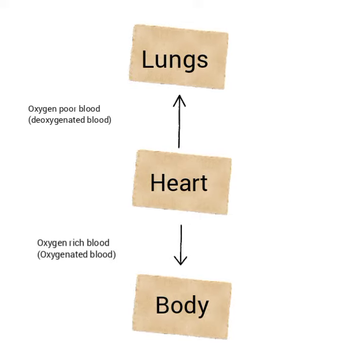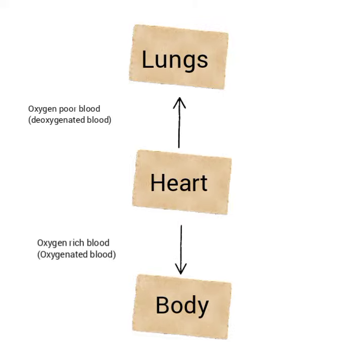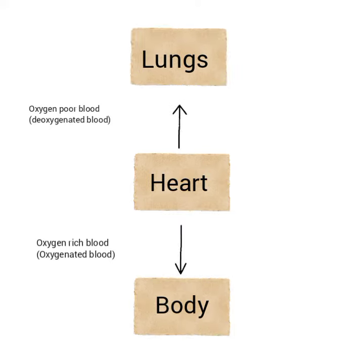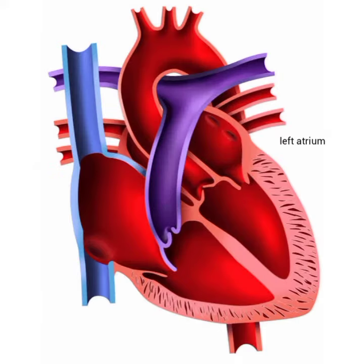یہ deoxygenated blood — مطلب وہ خون جس میں oxygen کم مقدار میں ہوتی ہے — کو پھیپھڑوں کی طرف پمپ کرتا ہے، جبکہ oxygenated blood — مطلب وہ خون جس میں oxygen کی زیادہ مقدار ہوتی ہے — اسے پورے جسم کی طرف پمپ کرتا ہے۔ There are four chambers in our heart: upper two chambers called atria (singular: atrium).